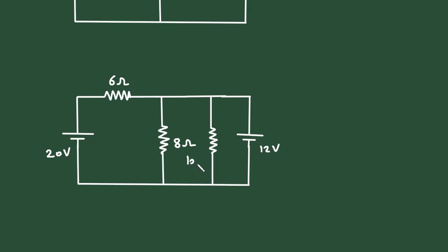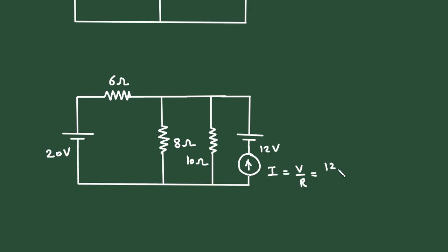The value will remain the same, that is 10 ohm. This voltage source will be converted into its equivalent current source. The direction of this current source will be according to the polarity of this voltage source — here the positive is upward, so the current direction will be upward. I is equal to V upon R: the value of voltage is 12 and the value of resistance is 10, so it will be 1.2 ampere. Now we can erase this voltage source.